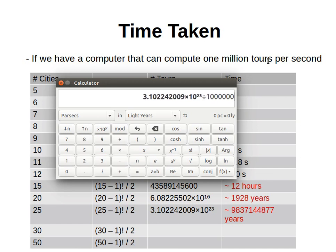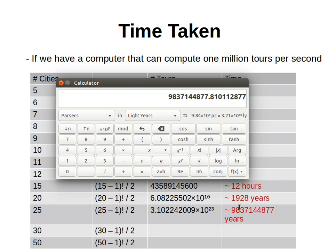If our computer can process one million tours per second, we divide by one million to get seconds, divide by 60 for minutes, divide by 60 for hours, divide by 24 for days, and divide by 365 for years. You can see how many years it would take that computer to go over all possible tours — and this is just 25 cities. If the number of cities is in the hundreds or thousands it becomes impossible to solve in real time. We need a way of finding at least a good enough solution, and simulated annealing is one way of achieving that.